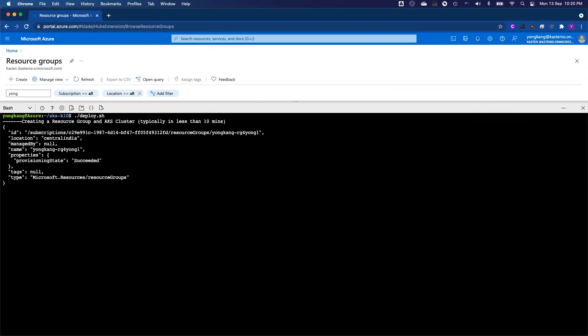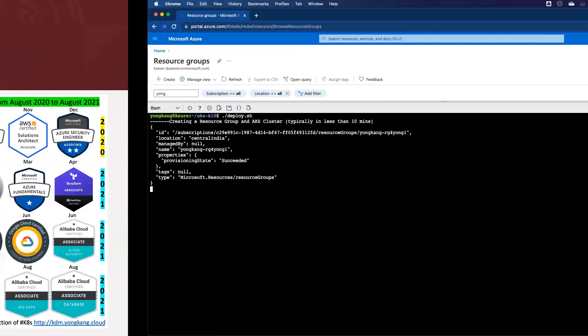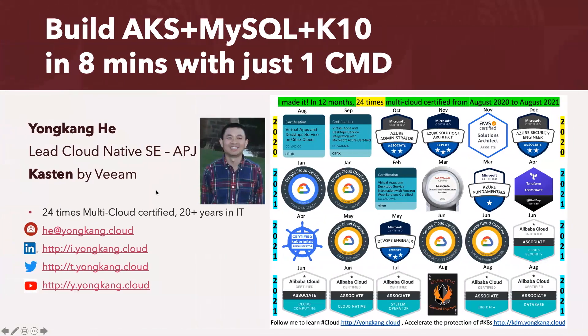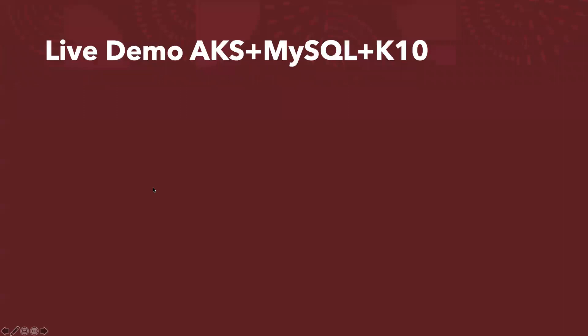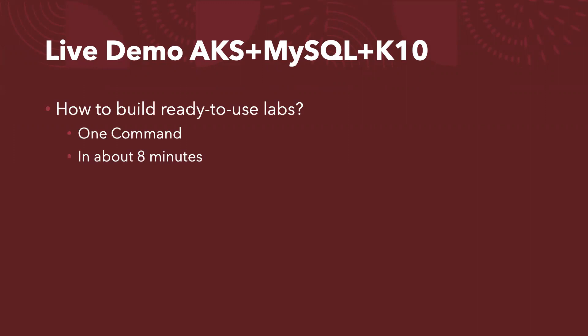So I already ran this magic command. It's called deploy.sh. Now let me come back to the slide to walk you through some of the details. So this is today's topic. I'm going to give you a live demo of building a Kubernetes cluster on Azure Cloud plus MySQL database plus custom K10.